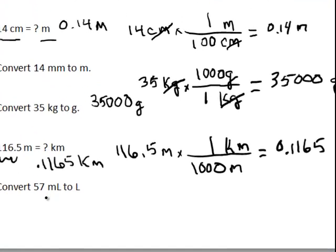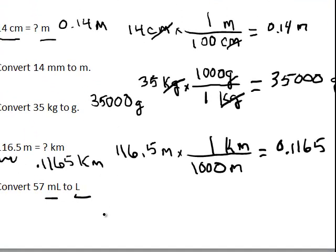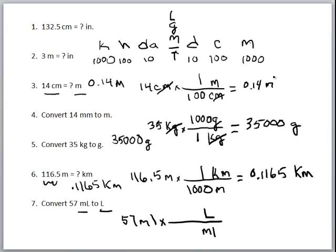Let's go to the other side of the scale and convert milliliters to liters. Using dimensional analysis with 57 milliliters — milliliters in the denominator, liters in the numerator. Our base unit is liters, and there are 1,000 milliliters in one liter, so 57 divided by 1,000 gives us 0.057 liters. You could also just move the decimal three places, but it's important to know dimensional analysis too.